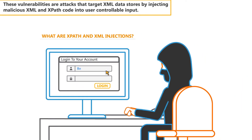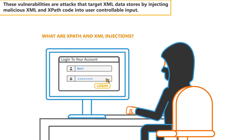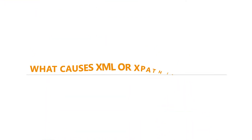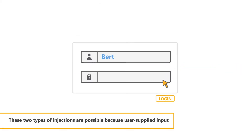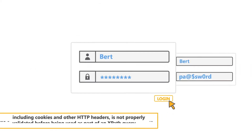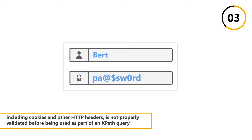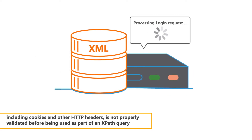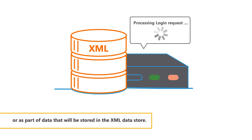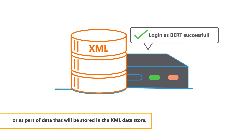These vulnerabilities are attacks that target XML data stores by injecting malicious XML and XPath code into user-controllable input. These two types of injections are possible because user-supplied input, including cookies and other HTTP headers, is not properly validated before being used as part of an XPath query or as part of data that will be stored in the XML data store.